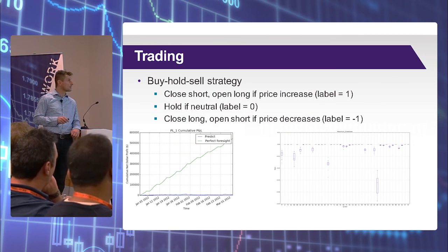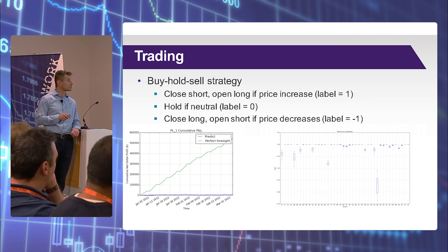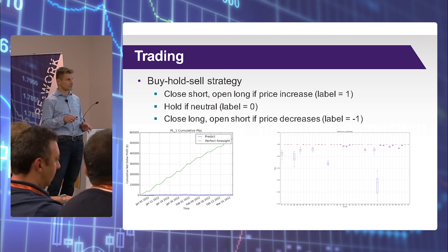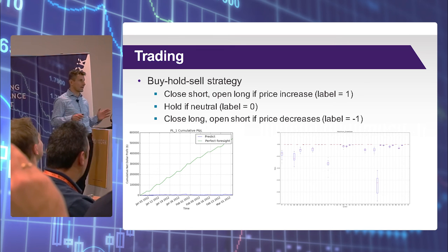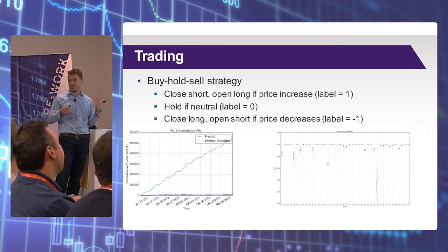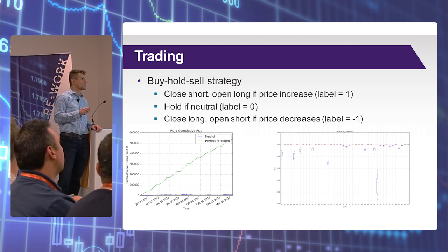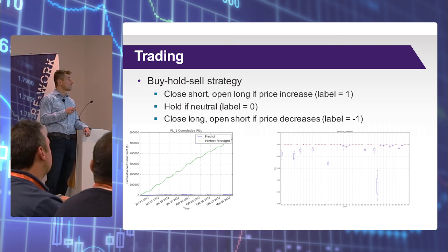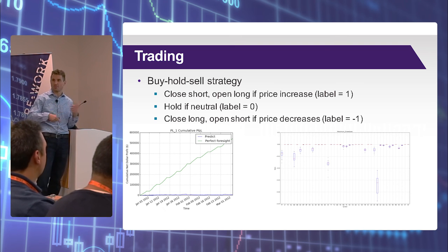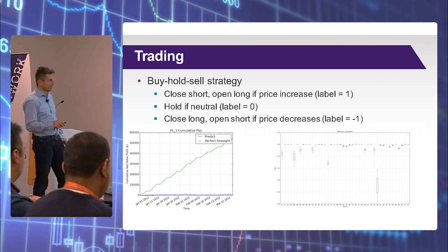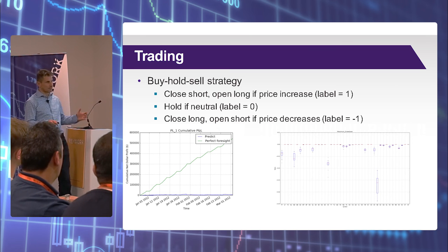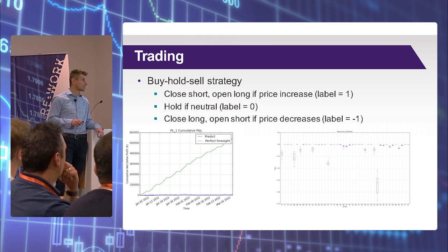We turned the predictions into a trading strategy — a very naive one. If the label is one, meaning price will go up by more than 10%, you close short and open long, and the opposite in the other direction. The drawdown chart shows that most of the time it's zero, and for some stocks there is a drawdown, but it's not that bad.